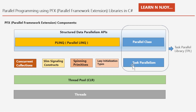The lower layer contains the task parallelism classes plus a set of additional constructs such as concurrent collections, slim signaling constructs, spinning primitives, and lazy initialization types to help with parallel programming activity. If you notice, the Parallel class together with the task parallelism constructs is called the Task Parallel Library — TPL. We will see all these things in upcoming videos.